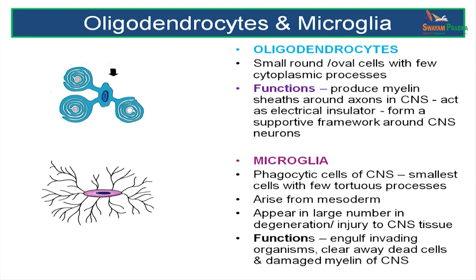Oligodendrocytes are the myelin-producing cells found in the central nervous system. One oligodendrocyte can provide myelin sheaths to parts of more than one axon — as seen in a figure where one oligodendrocyte sends processes to three neighbouring axons providing myelin sheaths for them. Myelin sheath is a protective covering which protects the axon it surrounds. Microglia are smaller cells with numerous branching processes. They appear in large numbers in degenerative injuries of the central nervous system and their function is phagocytic — they engulf foreign matter, dead cells, or tissue that needs to be removed.